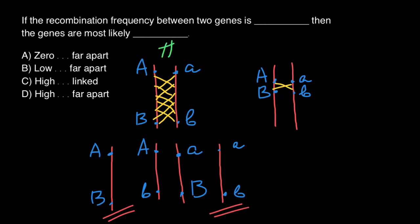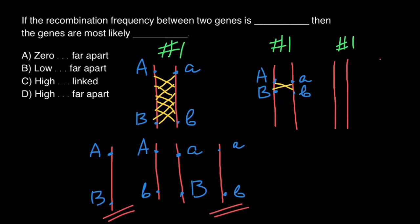Now imagine that this was chromosome number one — one from the mother's side, another from the father's side — so homologous chromosomes. Also imagine that we may have two homologous chromosomes number one and two homologous chromosomes, let's say number four.